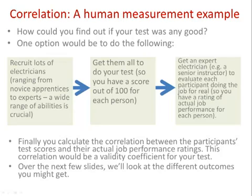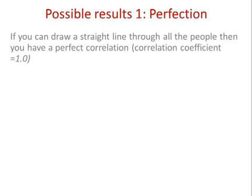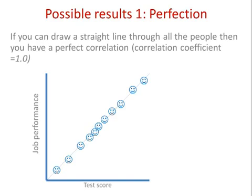Let's look at a few possible outcomes. This first is the perfect ideal world that never happens in real life but we'd really like. If we can draw a single straight line through all our electricians, we get a perfect correlation. On the scatter plot, job performance is on the vertical axis and test score on the horizontal axis. Up at the top we have expert electricians getting high test scores, correctly predicting excellent job performance. Down at the bottom, we have our useless no-hopers who performed really badly at all the tests.